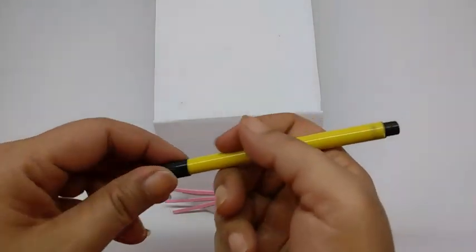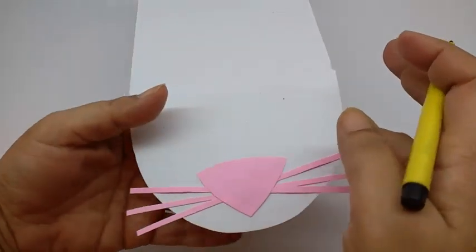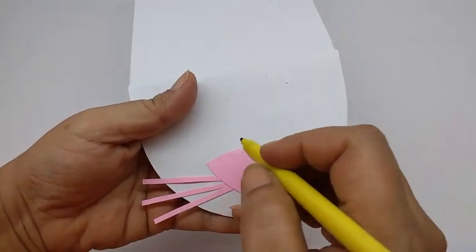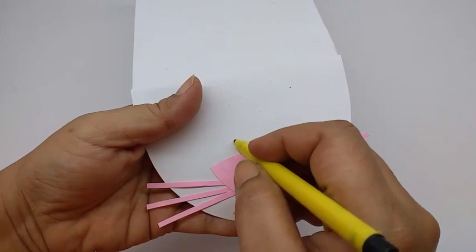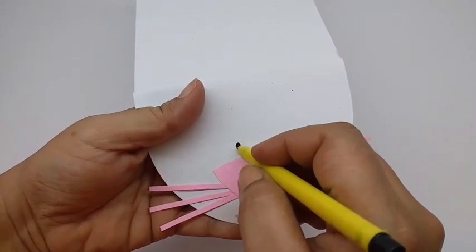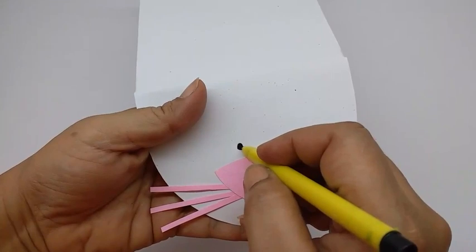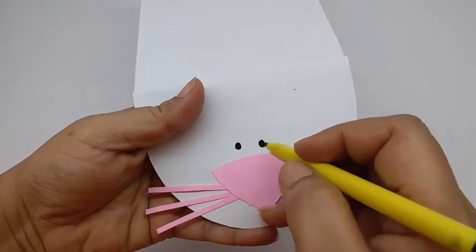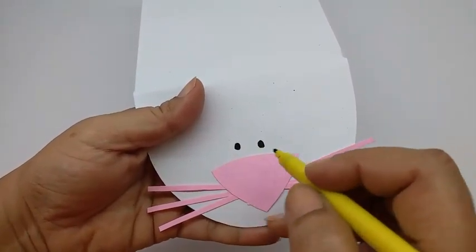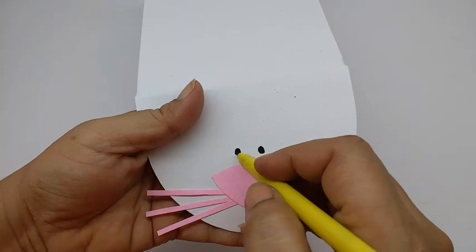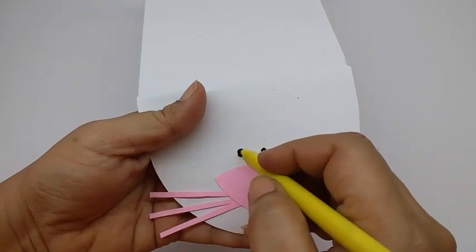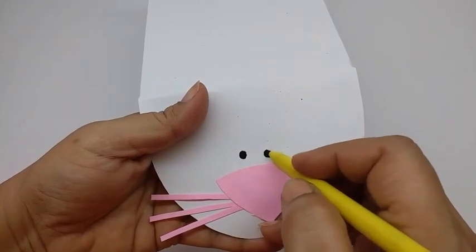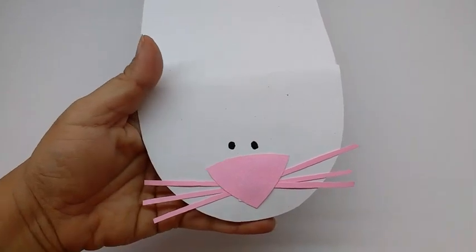Take the black colored pen and just mark out two eyes, right above the nose. So this is the nose. I will just mark out two eyes. They don't need to be at the same height. One can be slightly higher. It looks cute. Like so.